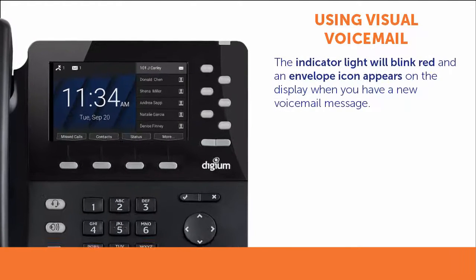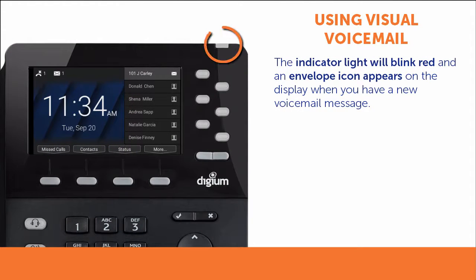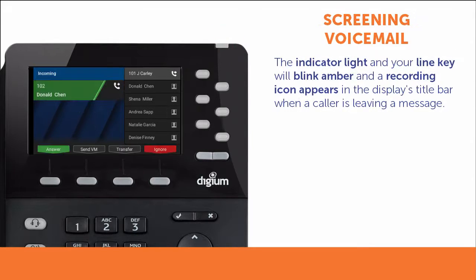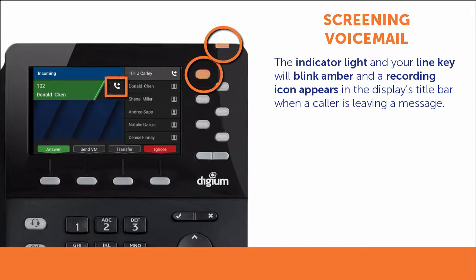When you have a new voicemail message, the red indicator light will blink and you will see an envelope icon on the display. When a caller is leaving a message, both the message waiting indicator and your line key blink in amber, and there is a recording icon in the display's title bar.